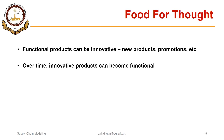As a food for thought: functional products can become innovative — through new features or promotions of existing products — and innovative products can become functional over time. The differentiating feature of an innovative product eventually becomes an order qualifier. For example, mobile phones initially didn't have cameras; models with cameras were innovative, but today a camera is an integral part of a smartphone — an order qualifier. Similarly, color televisions were once innovative products but became functional products with the passage of time.